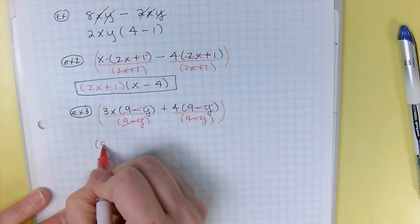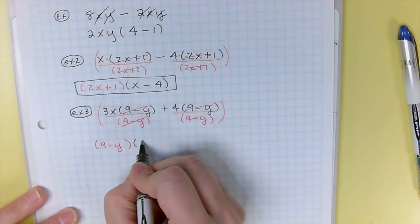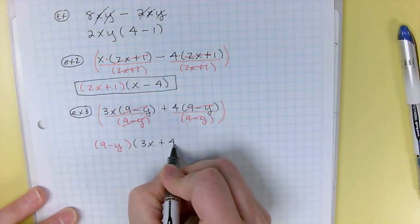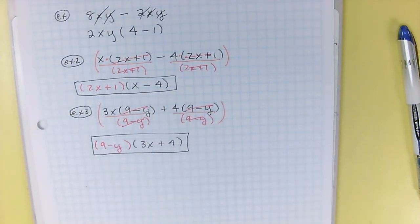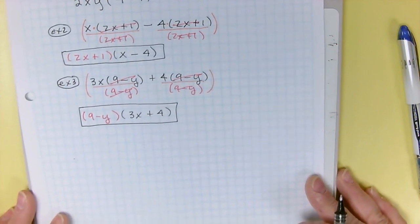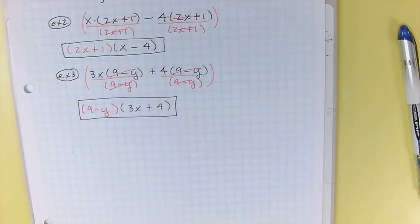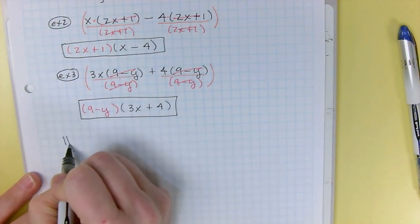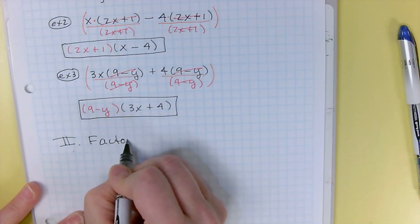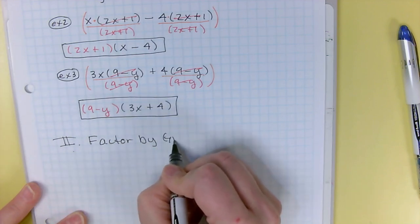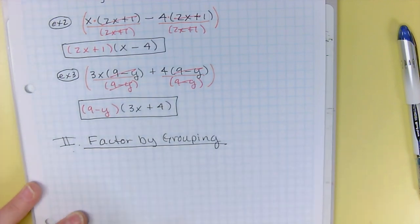The 9 minus y goes to the front, and what you're left with is 3x plus 4. All right, Roman numeral 2, we're going to do factor by grouping the whole process. Factor by grouping.